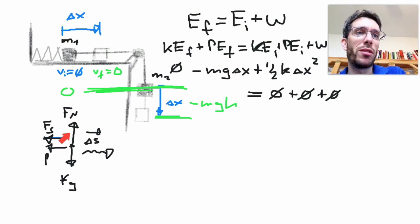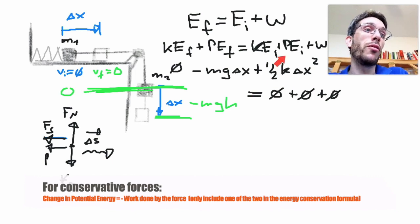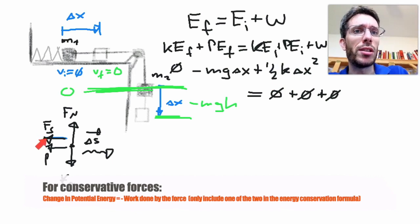remember the important thing is for a conservative force, if we consider the potential energy attributed to a conservative force, then we do not consider the work done by that conservative force in the same equation, otherwise we account for it twice. So here we already took in the potential spring energy, therefore we will not consider the work done by the spring.